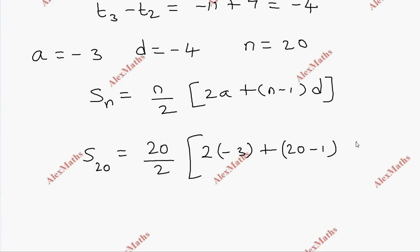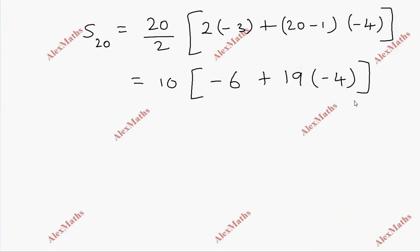That's 10 into minus 6 plus 19 into minus 4. Minus 6, and the minus sign: 9 times 4 is 6... 3 times 4, 1 times 4 plus 3 is 7.